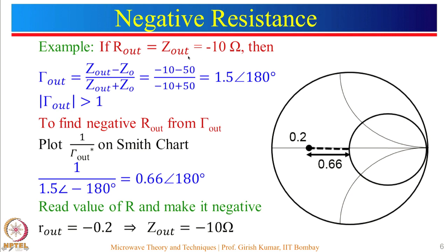If gamma_out is given, we can use the Smith chart to find Z_out. However, the Smith chart always represents gamma less than 1, so how do we use it when gamma_out is greater than 1? There is a technique for that. To find negative R_out from gamma_out, you plot (1 / gamma_out*) — the reciprocal of the complex conjugate of gamma_out — on the Smith chart. Since gamma_out is greater than 1, then 1 divided by gamma_out will always be less than 1, so it can be placed on the Smith chart.